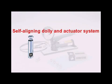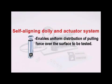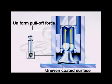The PosiTest self-aligning dolly and actuator system enables uniform distribution of the pulling force over the surface being tested. It maximizes repeatability by eliminating the possibility of shear forces which may result in one-sided pull-offs on rough and uneven surfaces. Pull-offs are always perpendicular to the substrate.